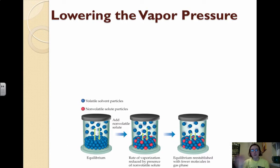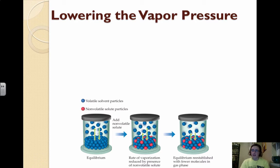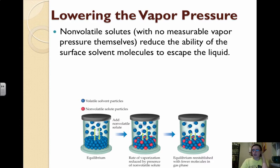Getting back into colligative properties, the first one we're going to focus on is vapor pressure lowering. Vapor pressure is the pressure exerted by the vapor when it's at equilibrium with a liquid in a closed system. The vapor pressure is the pressure that exists above a liquid. When we look at vapor pressure, it depends on the total concentration of the solute particles, not what solute you put in.